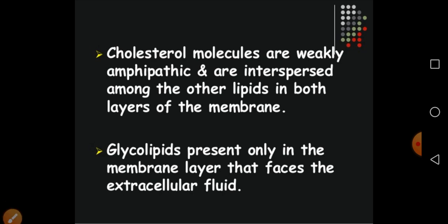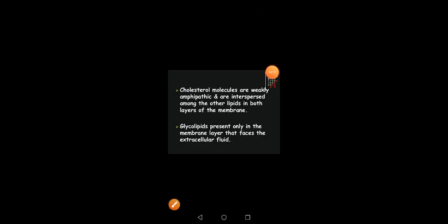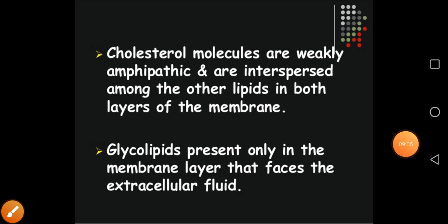Cholesterol is also present in the membrane. Cholesterol is a very important component of the plasma membrane — it is an organic molecule of sterol nature. Cholesterol is also the precursor for different steroid hormones, for vitamin D, and for bile acids. Remember, cholesterol is absent in prokaryotic cells. Cholesterol helps to maintain the fluidity of the plasma membrane.